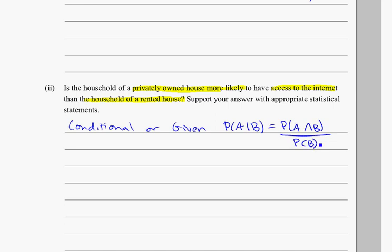What we're trying to compare here is the probability of having the internet given that you own a house. How does it compare to the probability of having internet given that you rent a house? Right now we're asking to see, is this more likely? Is that one bigger? We're checking it out to see if it's true.